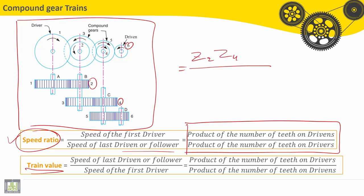...divided by the product of the number of teeth on the drivers. So drivers are Number 5, Number 3, Number 1. Z1 multiply Z3 multiply Z5. This is the speed ratio.